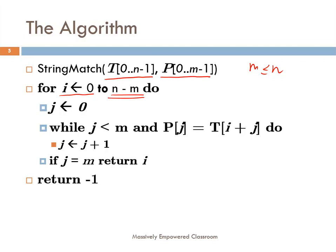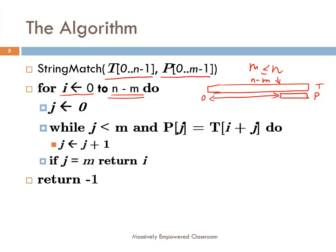Why do we only go to N minus M? Because if you are looking at the end of the array, there must be M elements to compare to the pattern — there is no point going beyond that. So your text T goes to the end, and the pattern P is of length M. The position N minus M is the last valid starting point. We only need to go from 0 to N minus M, not 0 to N minus 1, because the pattern itself is of length M and we need to match it to the remaining characters in the text.